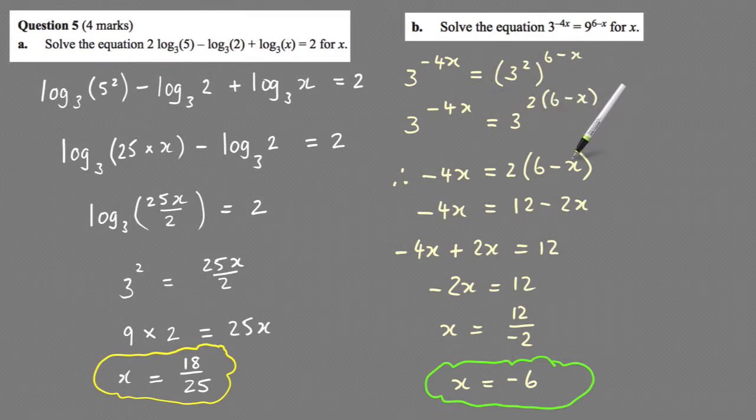From here just expand brackets. So that becomes 12 minus 2x. Then moving this to that side becomes plus 2x, and then that equals minus 2x, which equals 12.